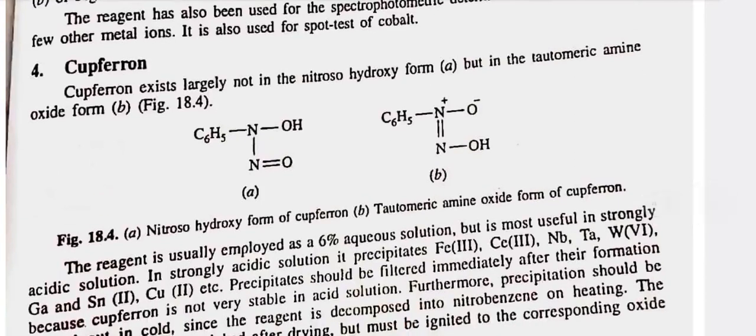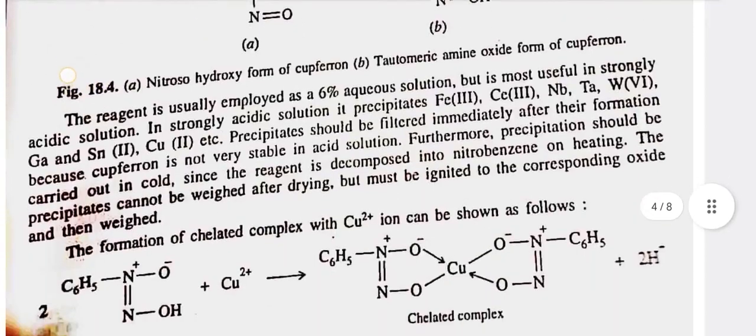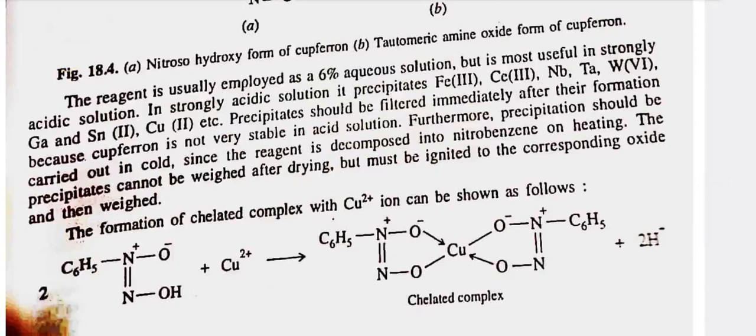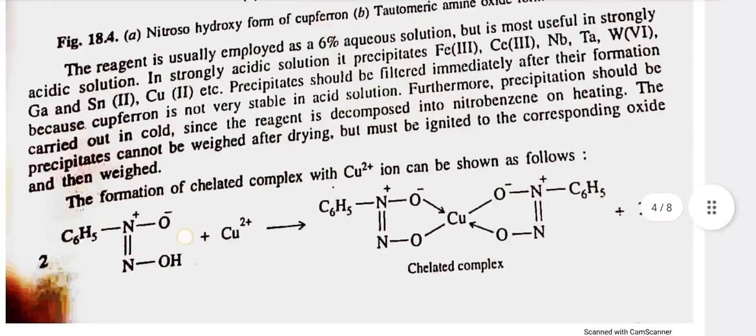Fourth, cupheron — cupheron exists largely not in the nitrosohydroxy form A but in the tautomeric amine oxide form B. The reagent is usually employed as a 6% aqueous solution but is most useful in strongly acidic solution. In strongly acidic solution, it precipitates Fe³⁺, Ce³⁺, Nb, Ta, W⁶⁺, Ga, Sn²⁺, Cu²⁺, etc. Precipitates should be filtered immediately after their formation because cupheron is not very stable in acid solution. Furthermore, precipitation should be carried out in cold since the reagent is decomposed into nitrobenzene on heating. The precipitates cannot be weighed after drying but must be ignited to the corresponding oxide and then weighed. The formation of chelated complex with copper-2-positive ion can be shown as follows.